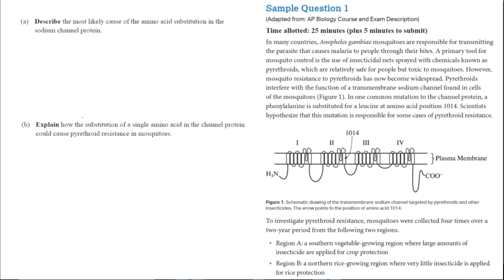I'll just go ahead and read through it to summarize here. In many countries, Anopheles mosquitoes are responsible for transmitting the parasite that causes malaria to people through their bites. A primary tool for mosquito control is the use of insecticidal nets sprayed with chemicals known as pyrethroids, which are relatively safe for people but toxic to mosquitoes. However, mosquito resistance to pyrethroids has now become widespread.